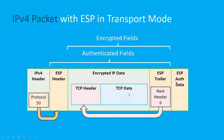Here's the ESP authentication data, and if this option is used with ESP, then we're going to also have authentication — meaning we're going to have an integrity check, or we're going to hash the entire range from the ESP header to the ESP trailer. We're going to hash all these fields so that we can verify the integrity of the data and confirm it wasn't changed.